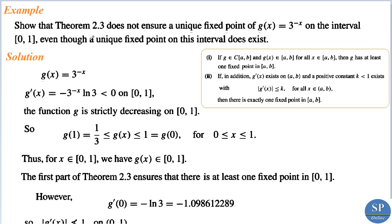Now we discuss another example: show that Theorem 2.3 does not ensure a unique fixed point of the function g(x) = 3^(-x) on the interval [0, 1], even though a unique fixed point on this interval does exist. We are given g(x) = 3^(-x) = 1/3^x on the interval [0, 1], and we have to show that the conditions of Theorem 2.3 are not satisfied for this function and interval.